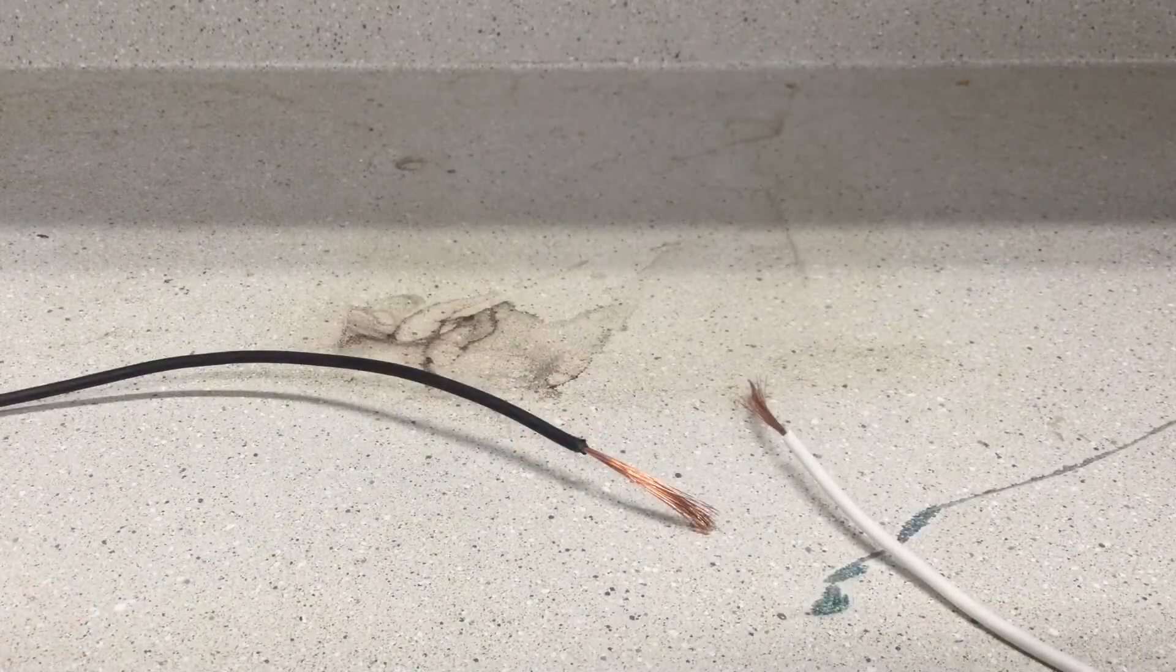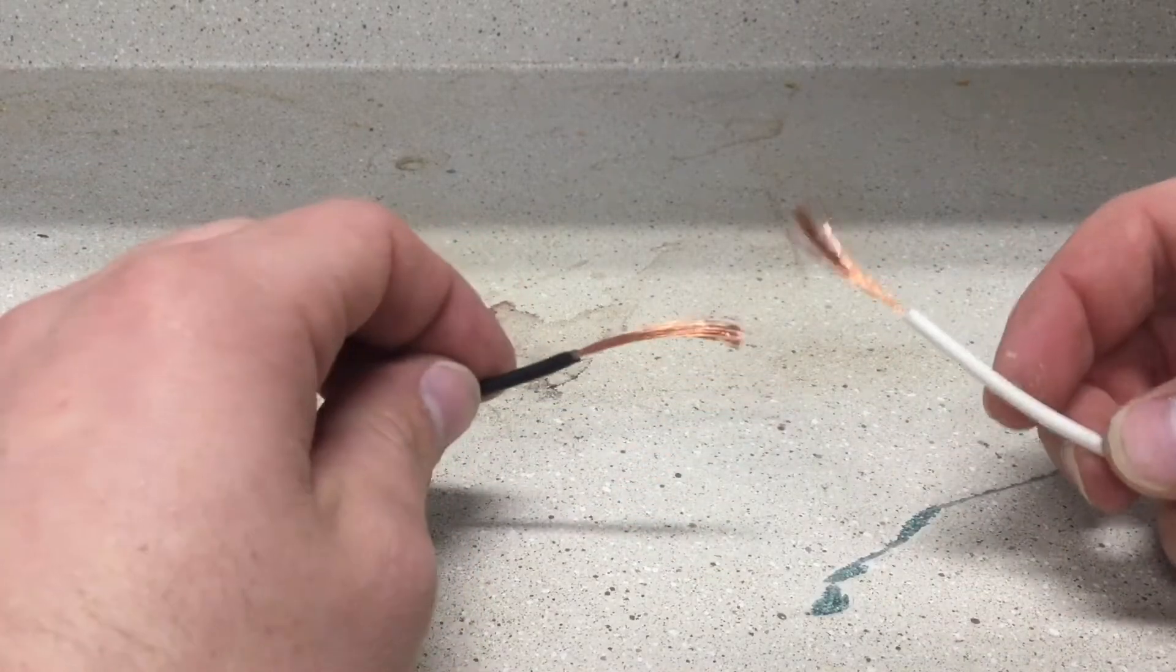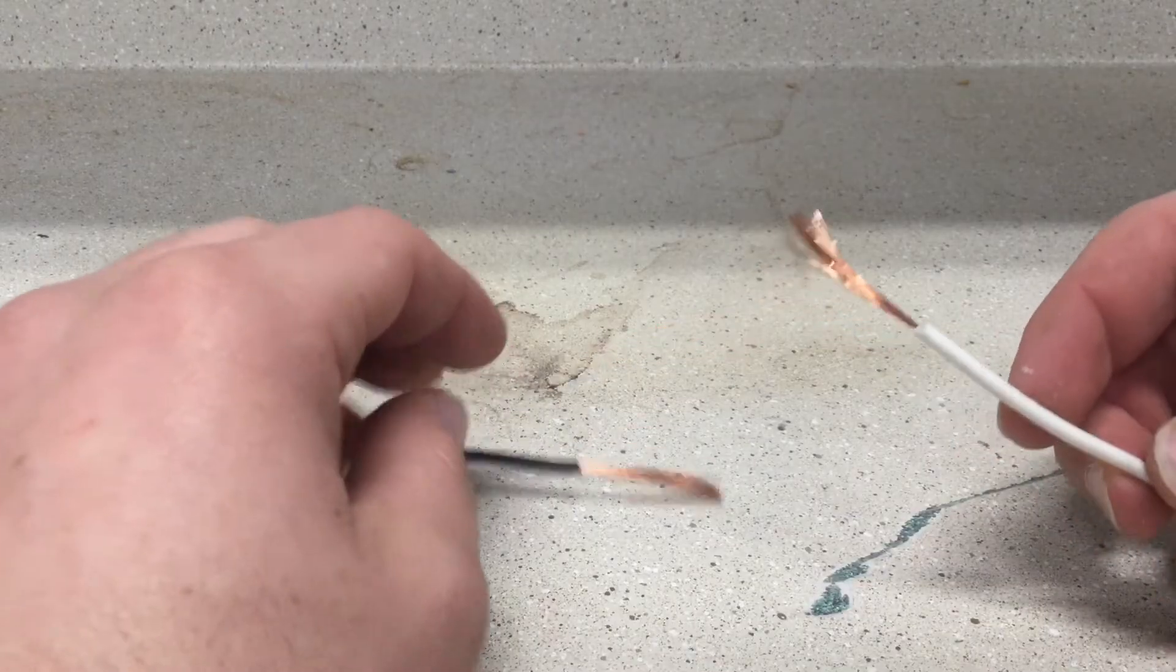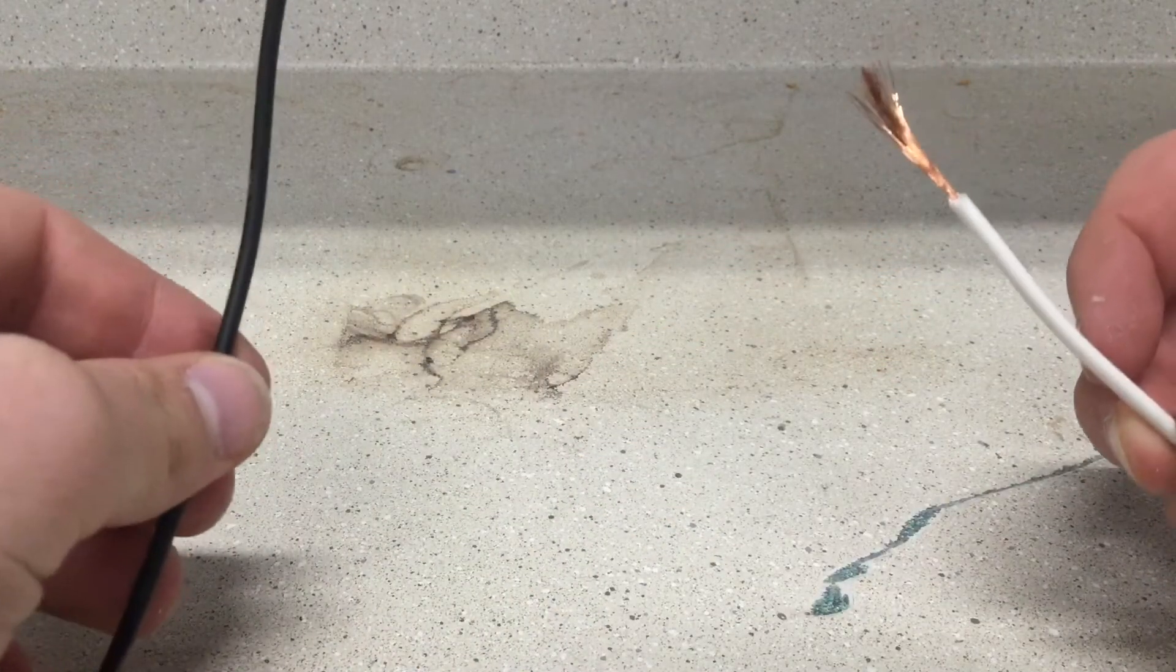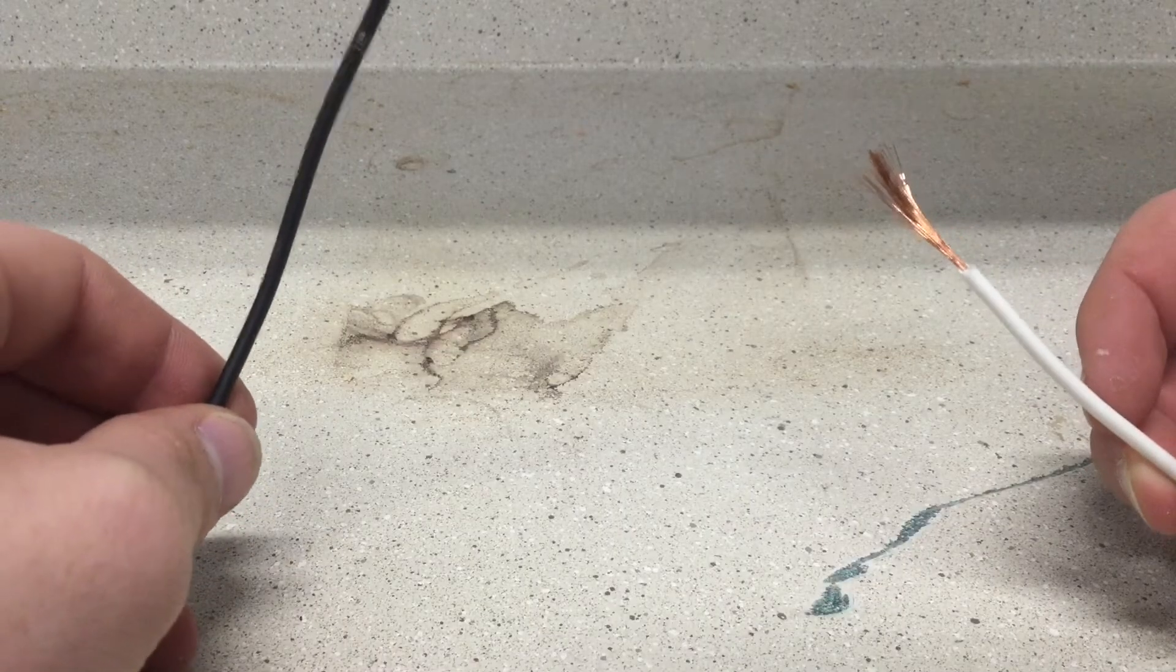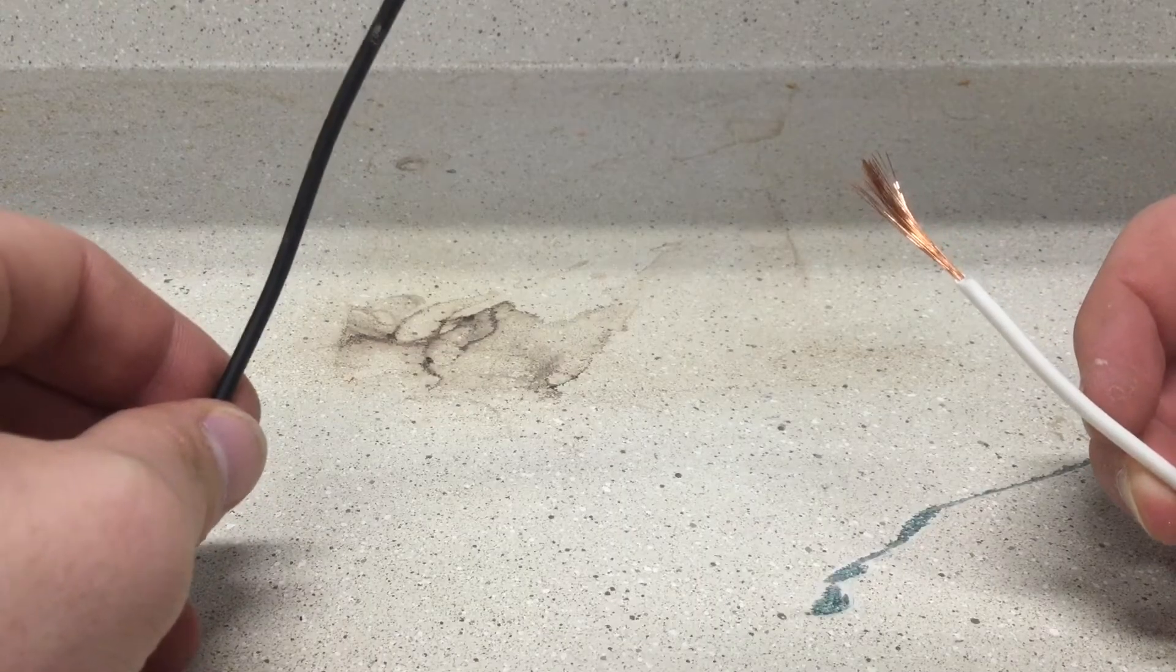What's up guys, today I have a tutorial on how to join two wires together. What you'll need for this is your two wires, wire strippers, and some electrical tape or a heat sink.